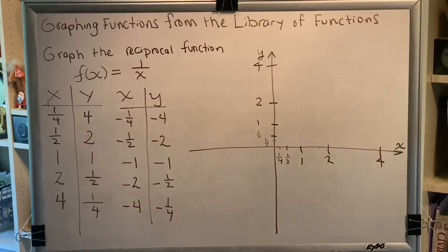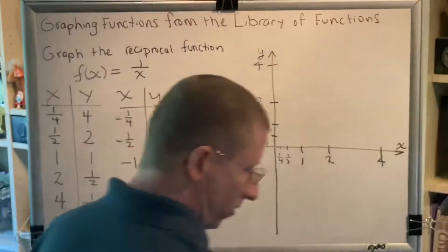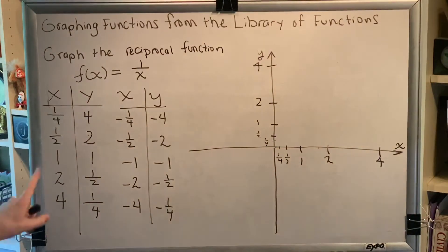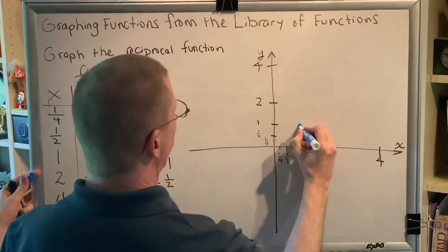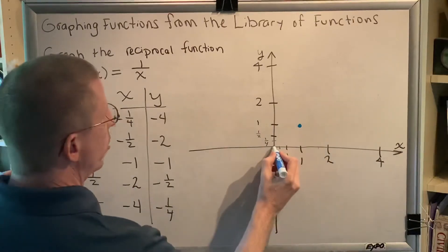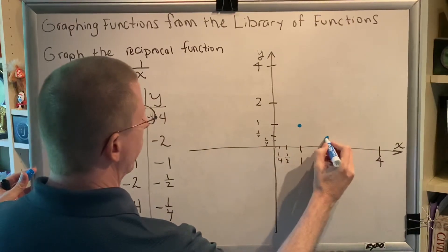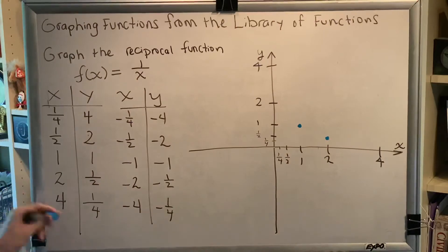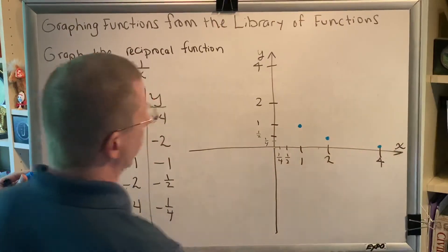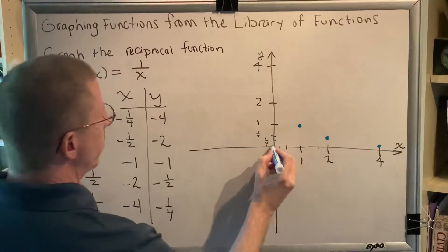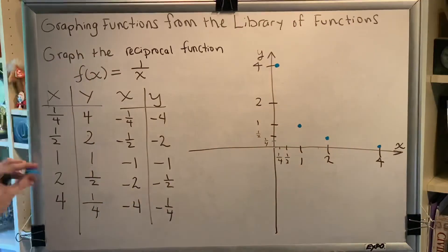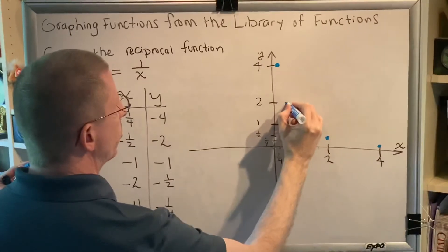With just these labels, I can now plot all 5 of these points. Let's do that. So, let's start with the easiest one. 1, 1. That would be here. Alright, 2, 1 half. That means, start at the origin, go 2 spaces to the right, and up just a half. 4, 1 quarter. 4 to the right and up a quarter would be here. 1 quarter, 4. Means, to the right a quarter, up 4. And, 1 half, 2. 1 half to the right, up 2 steps.